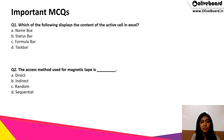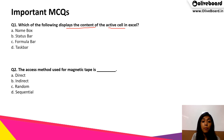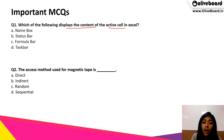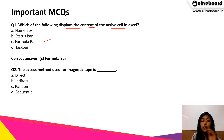Now we will discuss some important MCQs from an exam perspective. The first question: which of the following displays the content of the active cell in MS Excel? The options are name box, status box, status bar, formula bar, or task bar. The correct answer is formula bar — the formula bar displays the content of the active cell in Excel.